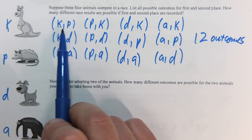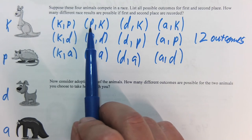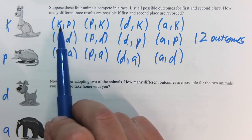Notice that K, P is different than P, K because in this case the possum came in first. In this case, the kangaroo came in first. So they're considered different.